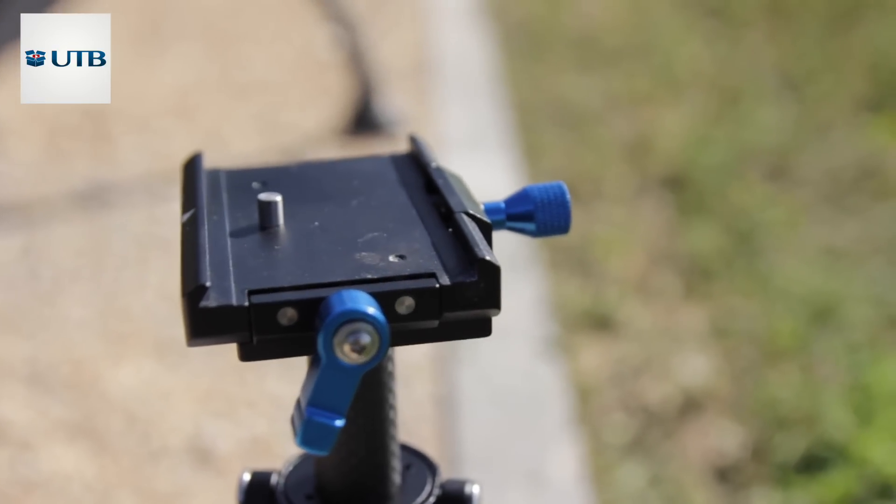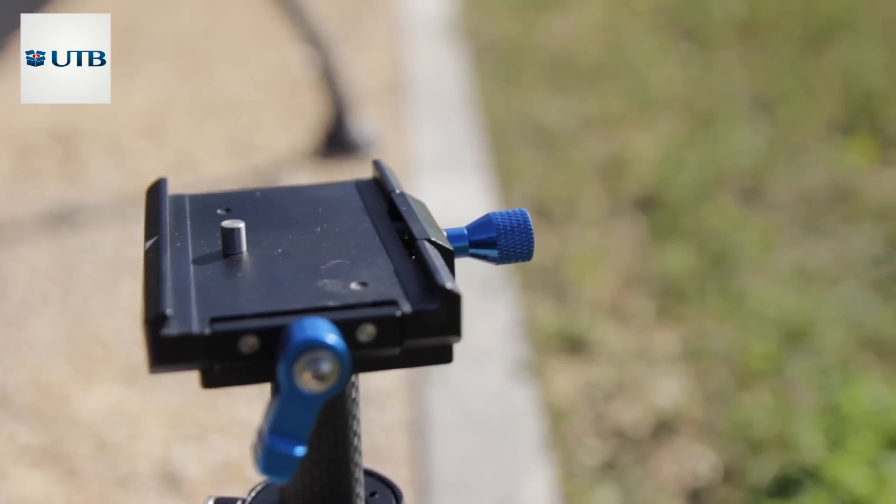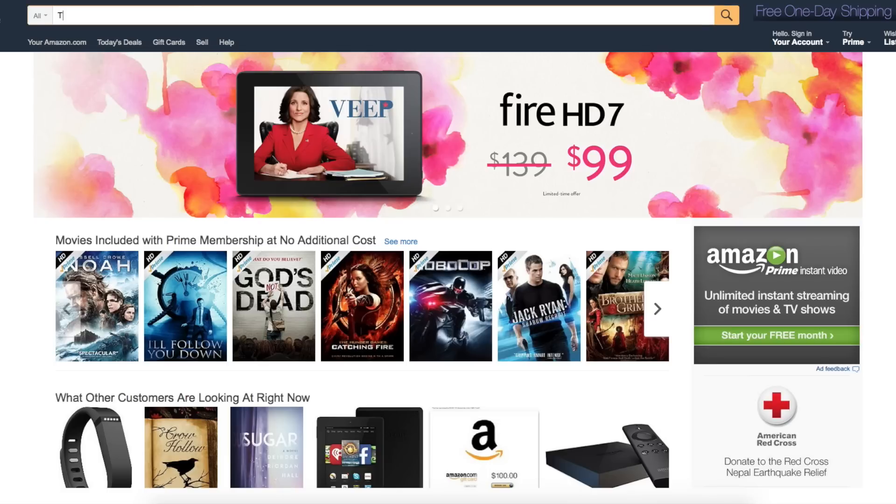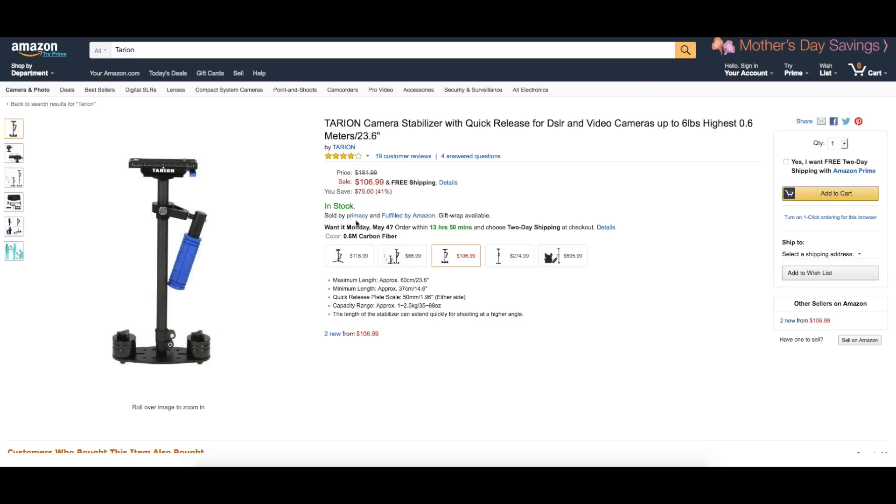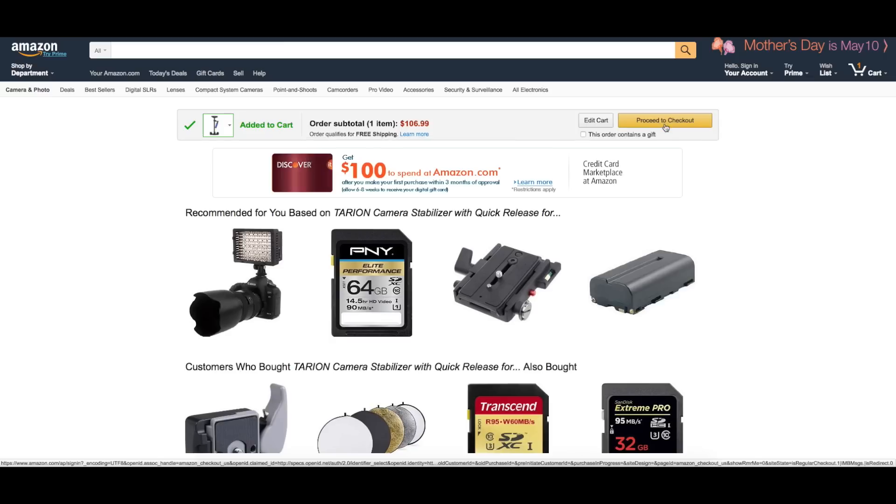So I will show you now how you can buy it. Just open amazon.com, put in Tarion. There we will have the 60 centimeter version. Click it, give it a look, put it in the cart, go through the process and buy it.